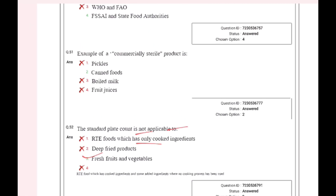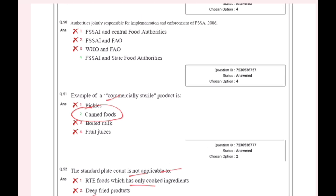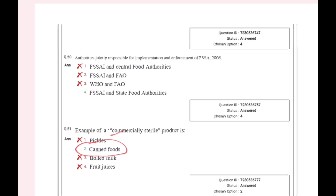Example of commercially sterile products: pickle is commercially sterile, fermented product, boiled milk is first sterile, fruit juice is first sterile, and canned food is commercially sterile.